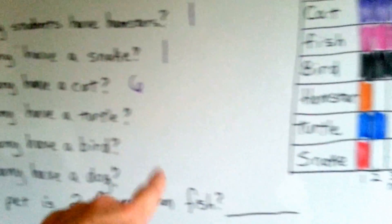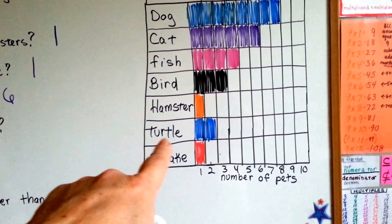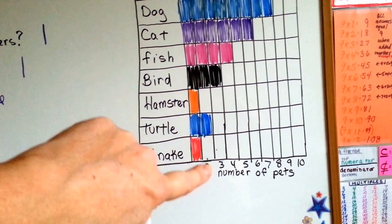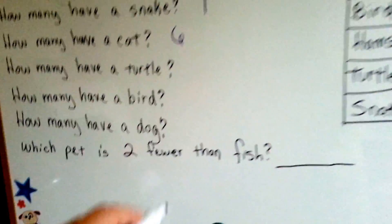How many have a turtle? A turtle. Here's turtle. Two students. Two boxes are filled. So two students have a turtle for a pet.